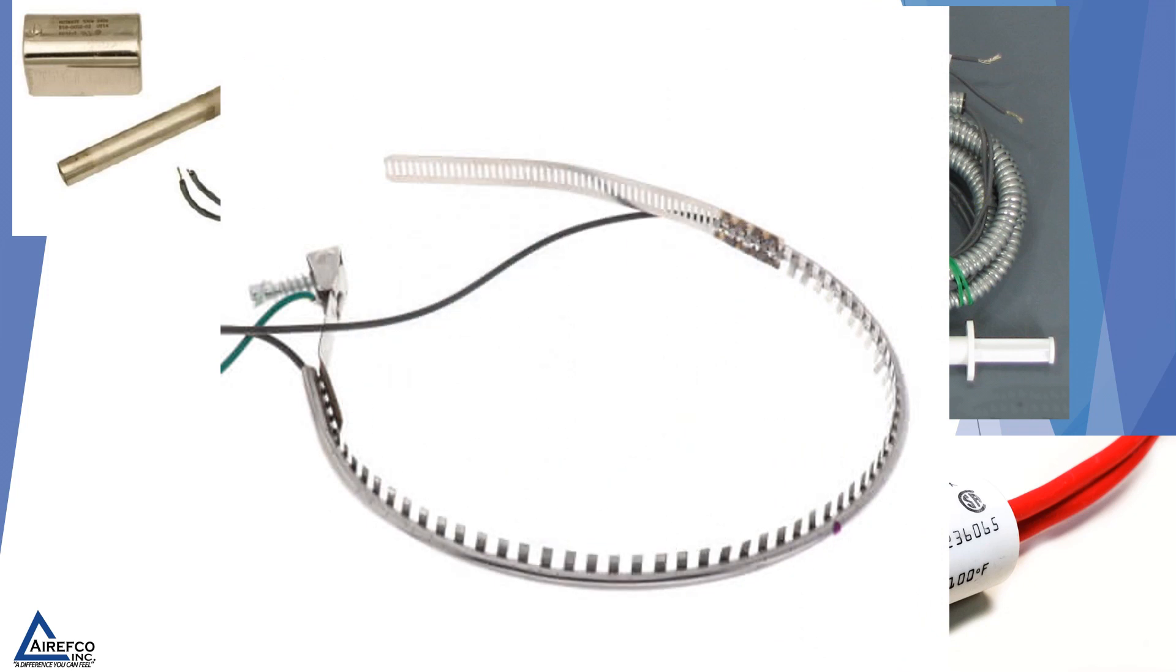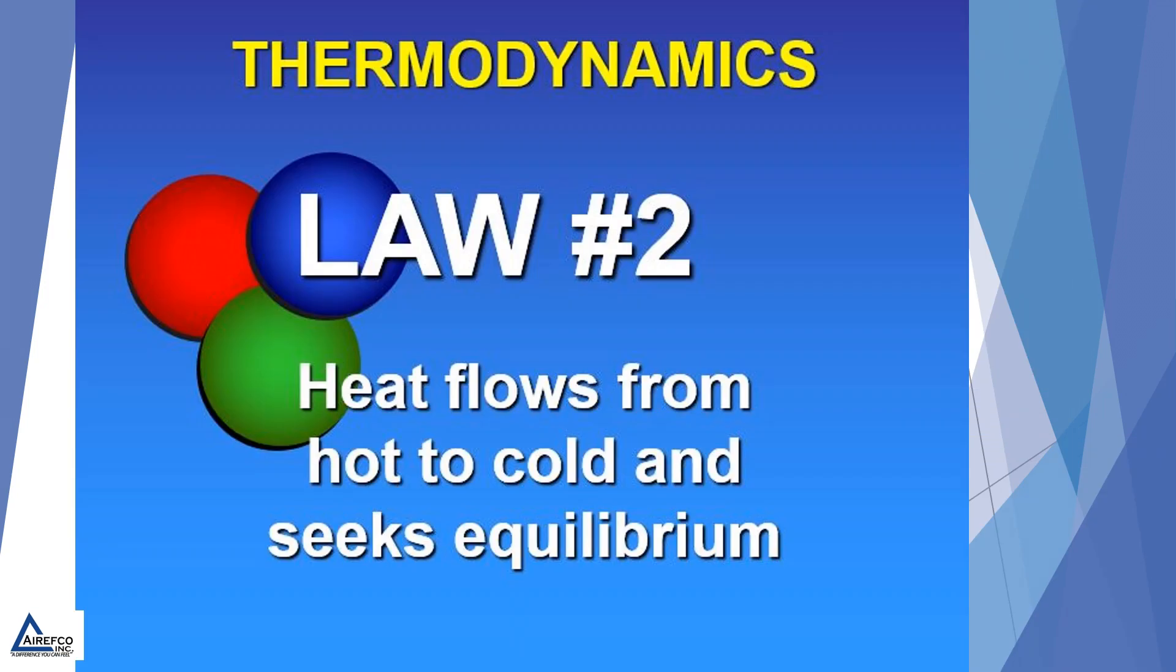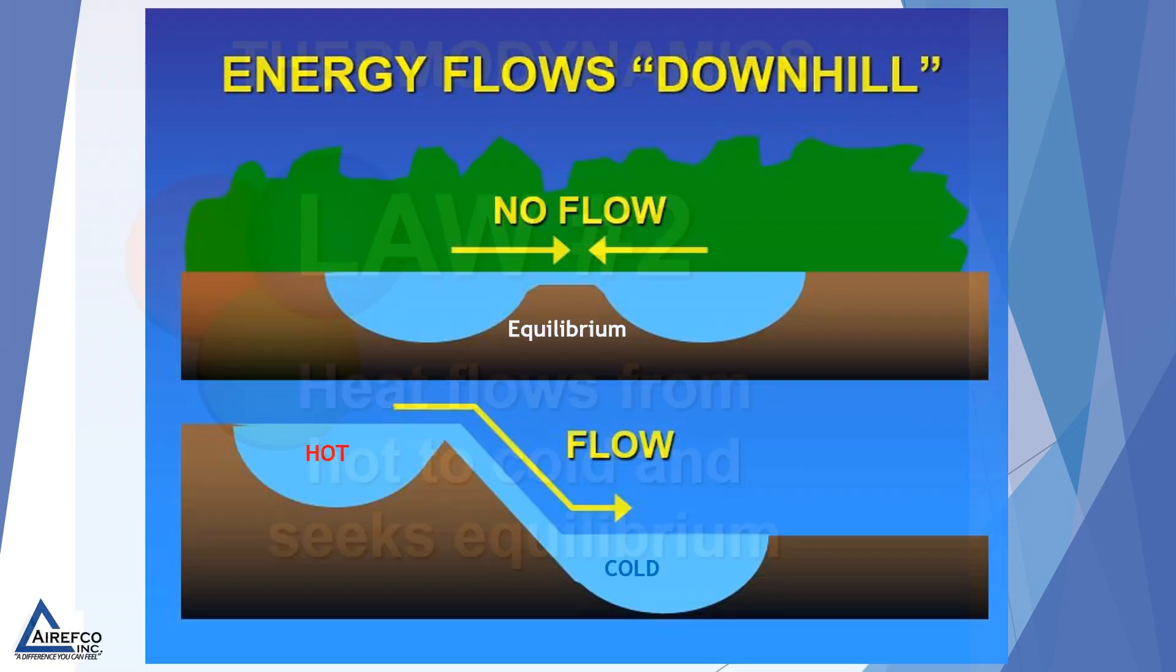You're going to see these on residential heat pumps and air conditioners. The reason that we want to have crankcase heat on a compressor is due to thermodynamics. If you've taken a refrigeration class recently, you would have been taught the second law of thermodynamics, which says that heat flows from hot to cold and seeks an equilibrium.